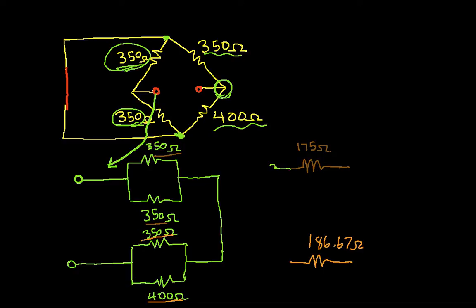I still have the same terminals and the same connections. Now I can simplify this into just a single resistor whose resistance will be 186 plus 175, which turns out to be 361.67, assuming I've done this correctly.